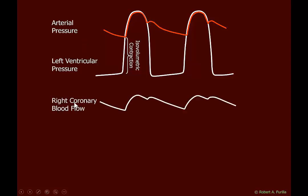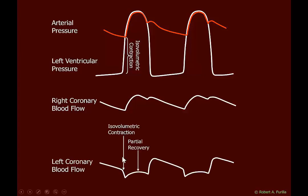Looking at right coronary blood flow, it tends to match the aortic pressure. We see the diastolic period, a rapid increase in flow relating to the increase in pressure, a bump again, and then the diastolic period. In the left ventricle, however, we see something different. During isovolumetric contraction, we see a sudden drop in blood flow — that is the squeeze going on; blood flow is decreasing because of compression.